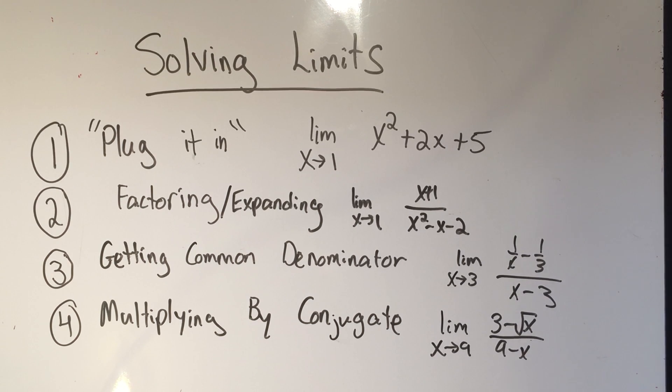The fourth step is multiplying by the conjugate and that's characterized by a square root in the limit. So anytime you see a square root in the limit problem it's almost always a good idea to multiply by the conjugate.